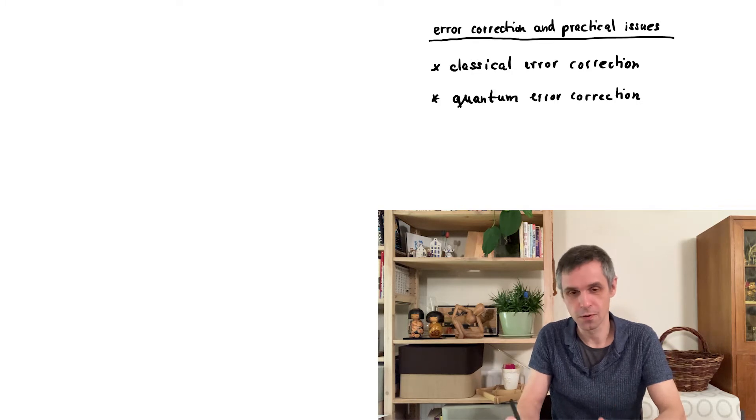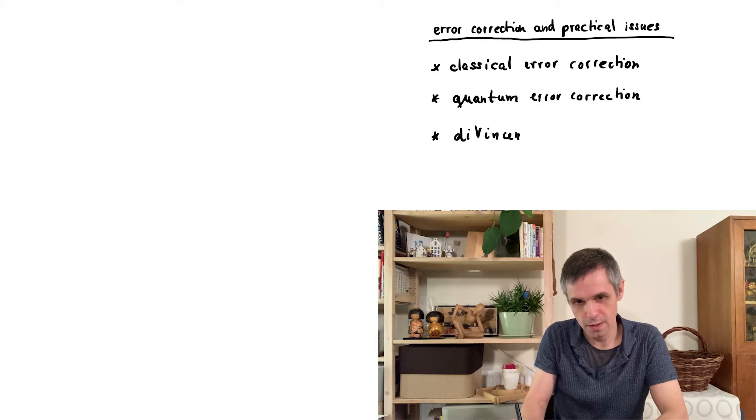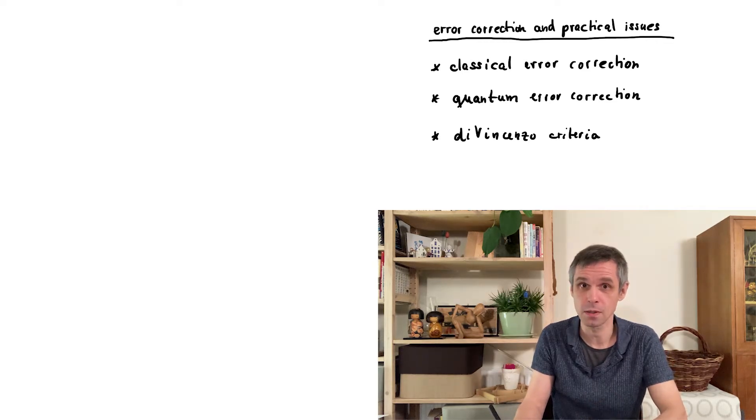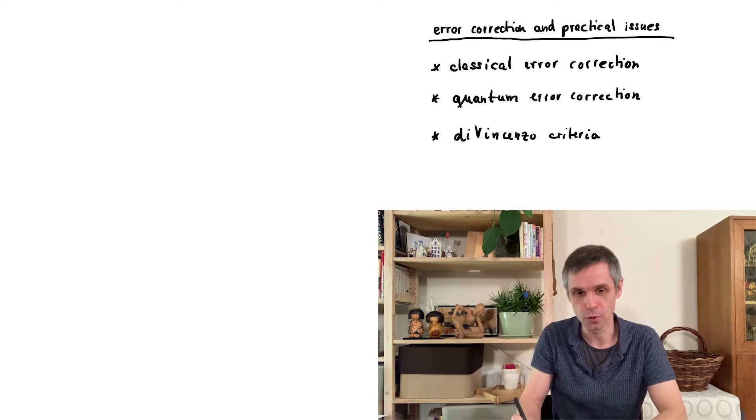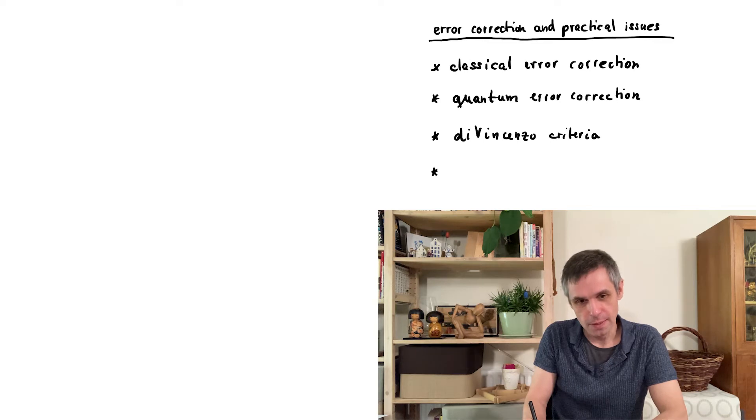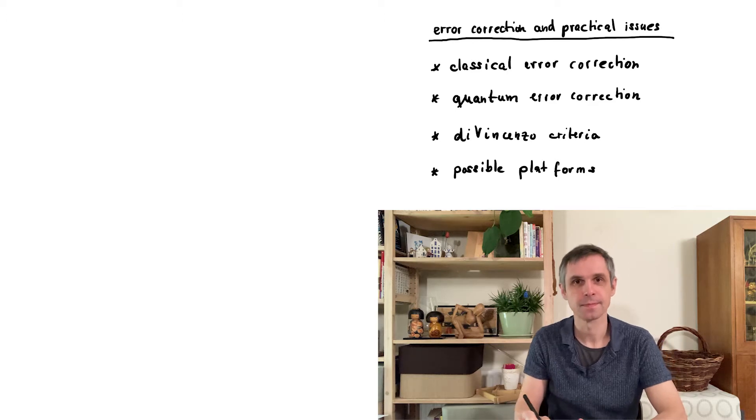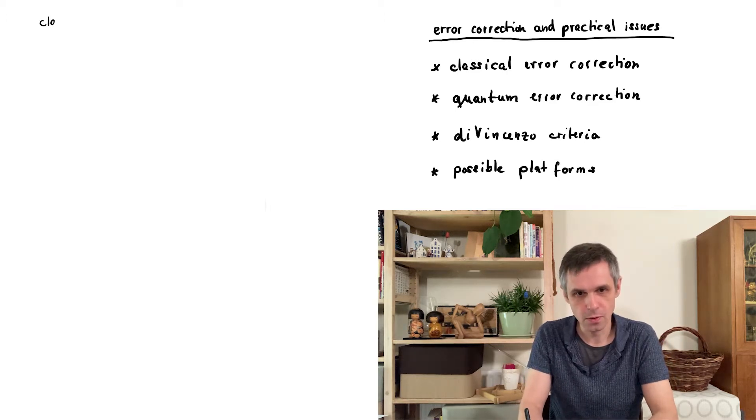And then we turn to physical systems and look at the so-called DiVincenzo criteria, which are very general criteria of what is required and expected of a physical system so that it could serve as a platform for quantum computation as well as for quantum communication. And finally we have a brief look at possible candidate systems. So let us start with classical error correction which will be very useful to fix our notions.